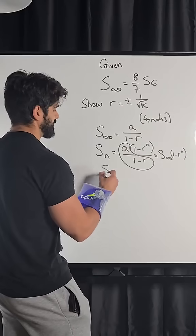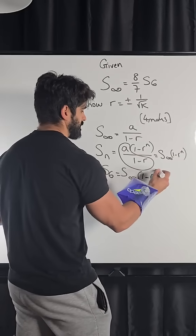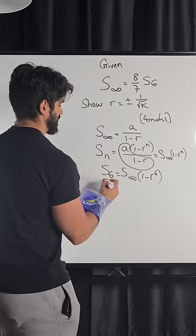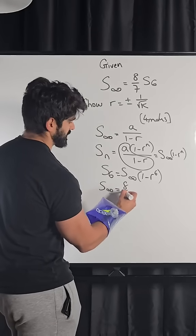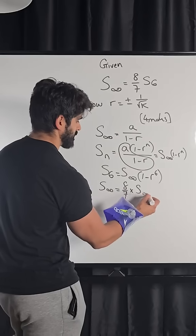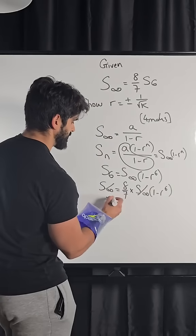Which means s6 is sum to infinity one minus r to the power of six. So we're saying above sum to infinity is eight over seven lots of sum to infinity one minus r to the power of six. This cancels, we get seven eighths.